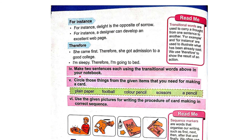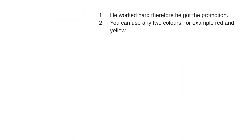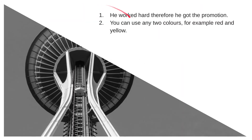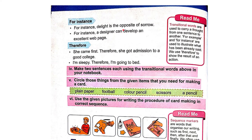Make two sentences each using the transitional words above in your notebook. For example: 'He worked hard, therefore he got the promotion.' 'You can use any two colors, for example red and yellow.'